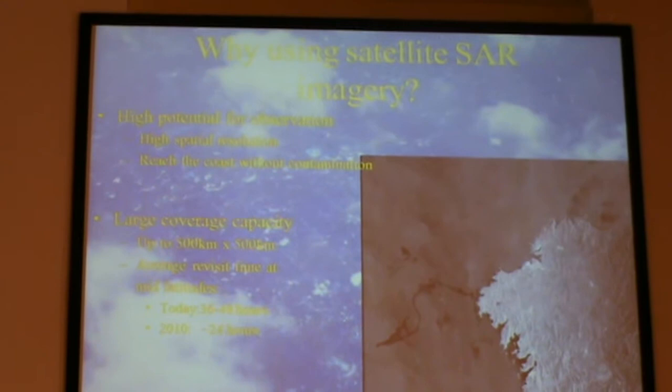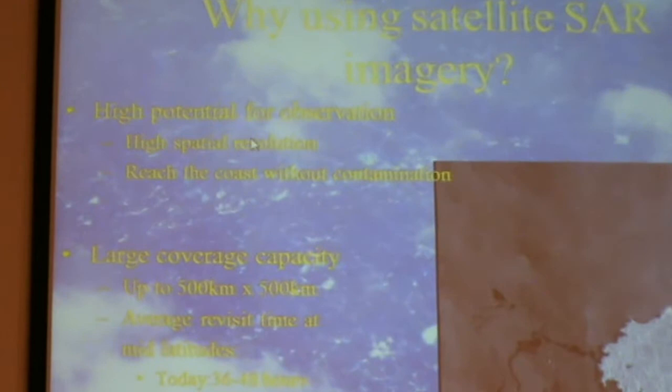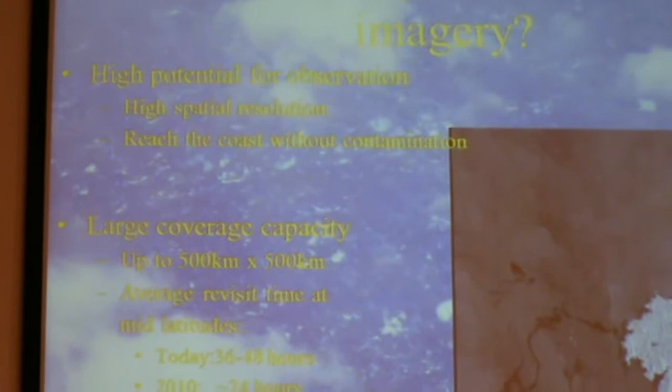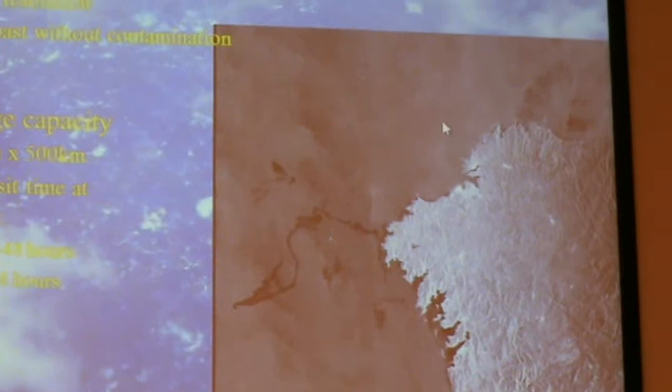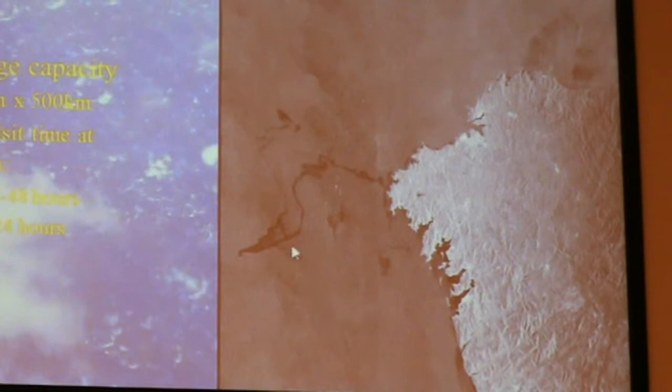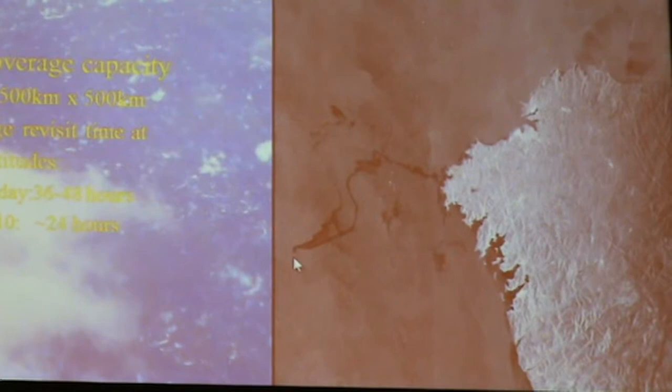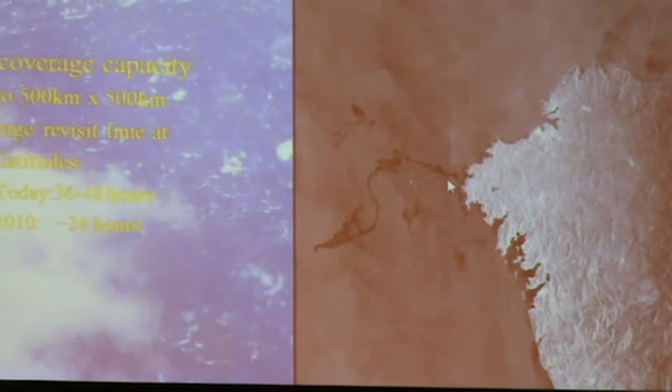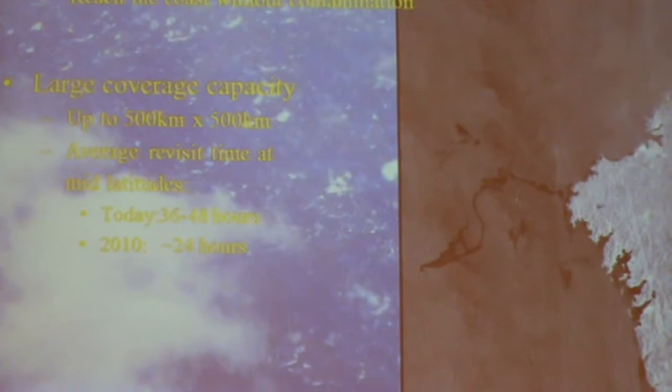With SAR's high resolution, you can reach the coast without contamination and have information very near the coast. Here is a SAR image where you see the sea surface roughness — on the right it's land, the Spanish coast. You can see an oil spill from a ship that sank there, with a lot of oil on the surface making the water very flat. When water is flat, the radar sends a signal but it goes away without coming back, so the backscatter radar cross-section is almost zero — it's black, low intensity.